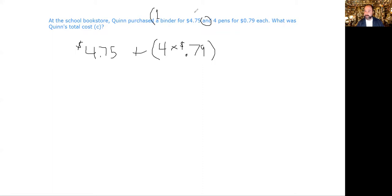Now note that you could have this be a parenthetical and this be a parenthetical. So if you wanted to, you could actually do one times $4.75 plus four times 79 cents, but we know that one times anything is the same thing, so that's why we didn't do all this extra stuff around the $4.75.